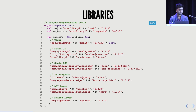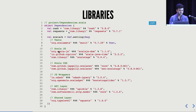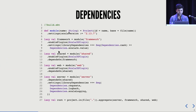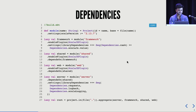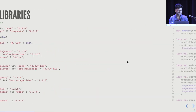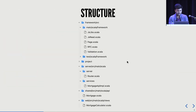For the back-end there are only two dependencies: I'm using Cask as my server and Requests to make requests. Again, this is fairly unopinionated — instead of Cask if you want Play, you can throw that in. This is just taking the previous build.sbt and hooking up the dependencies defined there.